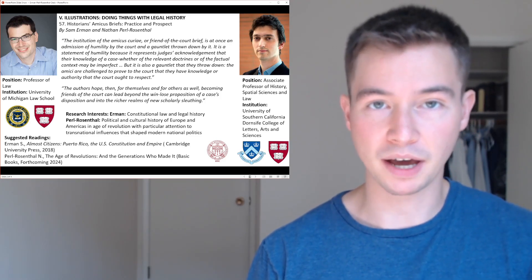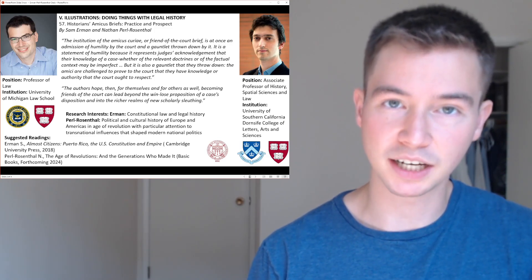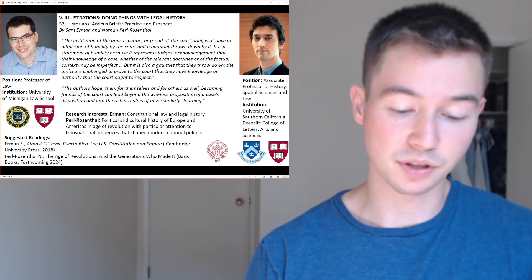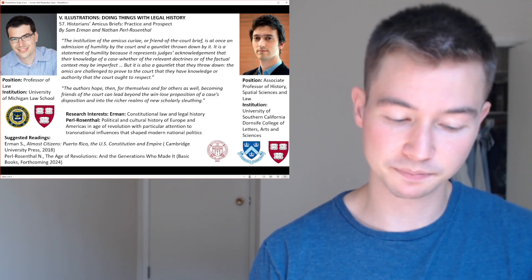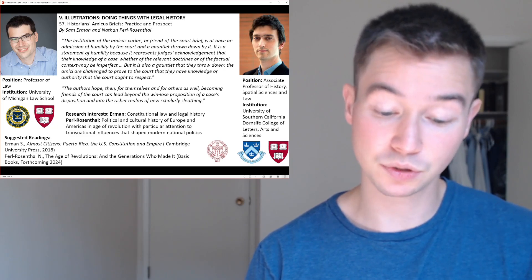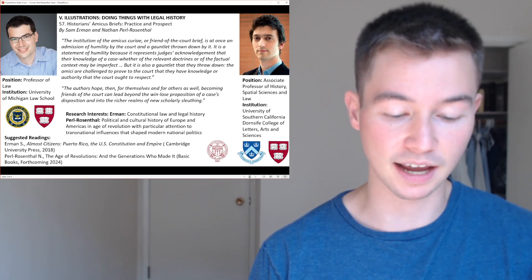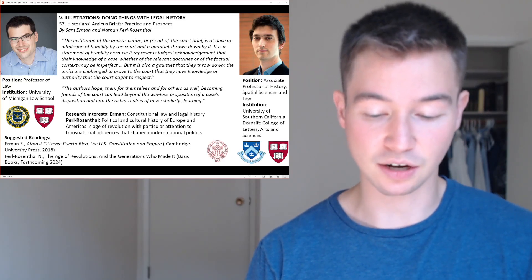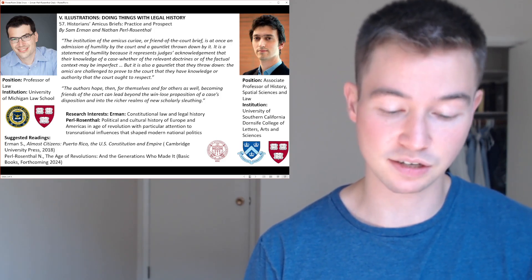To keep the topic manageable, several limitations are required. Though the chapter is concerned with the place of history in jurisprudence, this is not about originalism. Historians and originalists both engage the past, but they do so in different ways — originalist work rarely counts as good academic history and vice versa. The chapter also is not about historians' expert testimony, which is subject to cross-examination and other forms of testing at trial.